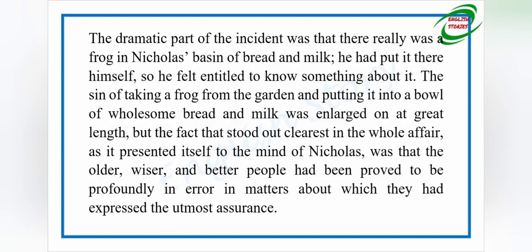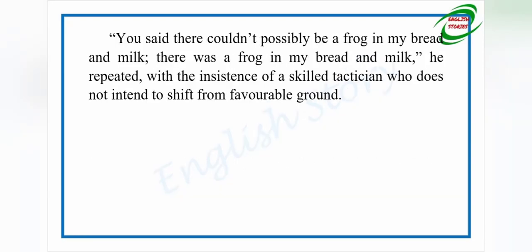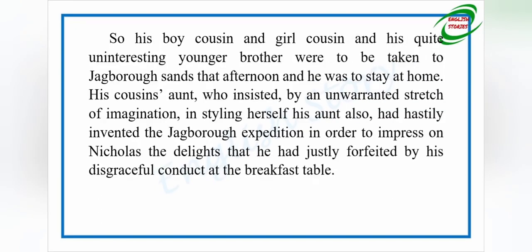The dramatic part was that there really was a frog in Nicholas's basin — he had put it there himself. The sin of taking a frog from the garden was enlarged on at great length, but what stood out clearest to Nicholas was that the older, wiser people had been proved profoundly in error. He repeated with the insistence of a skilled tactician: 'You said there couldn't possibly be a frog in my bread and milk — there was a frog in my bread and milk.'